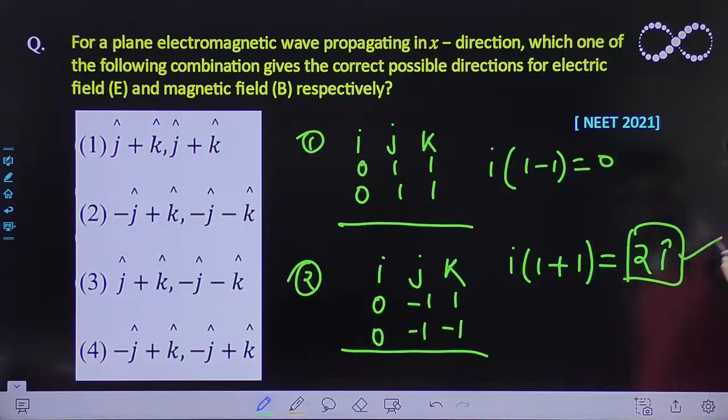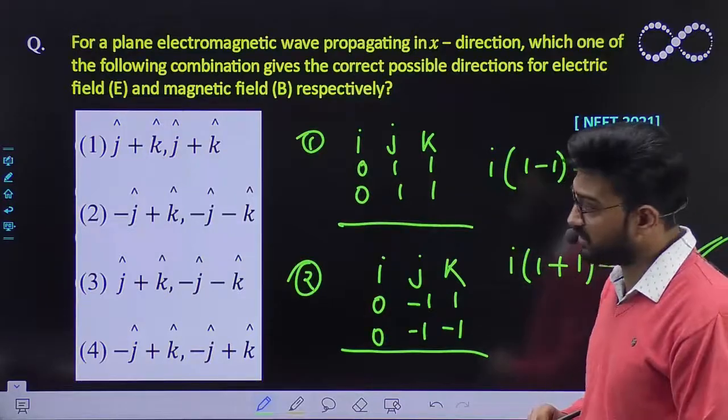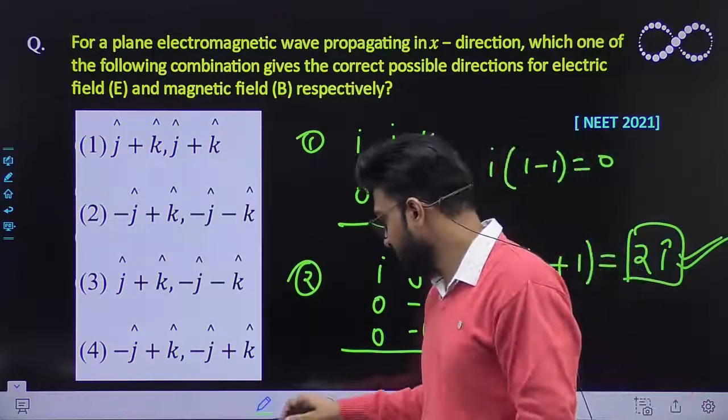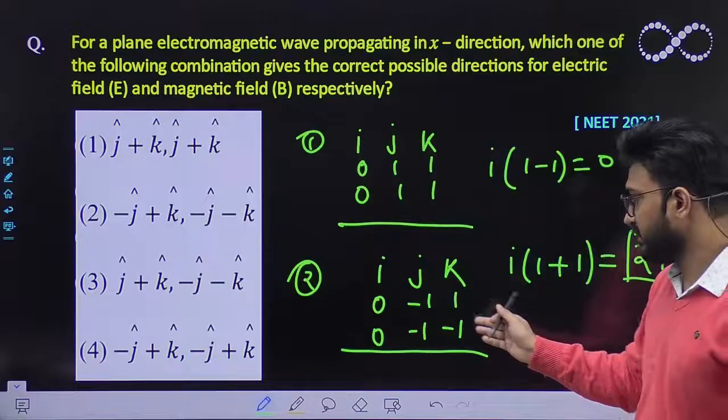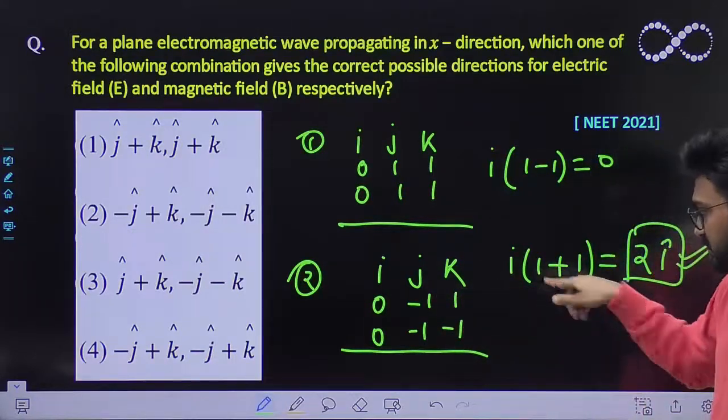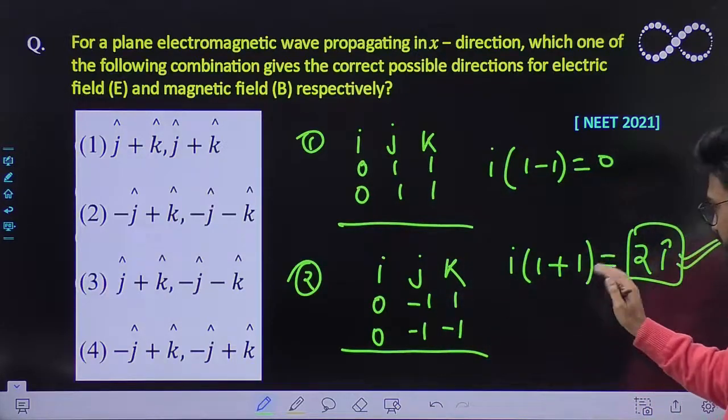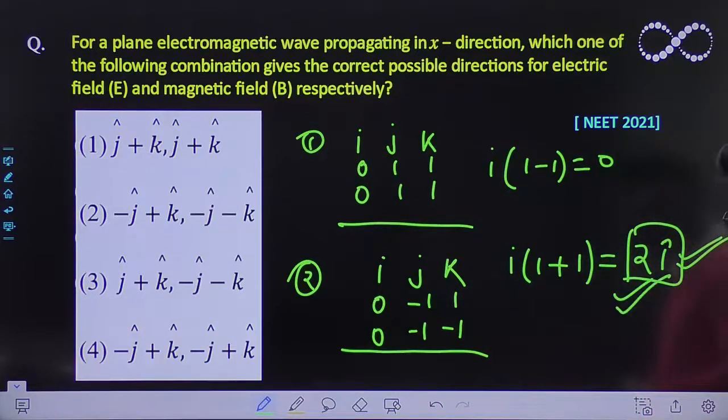So this is the direction that you are getting along x-axis. That means the second option is our correct option. As you can see, this term would be plus 1 and this term would be minus minus of minus is plus. So you get 0 values. The final answer is 2 i-cap.